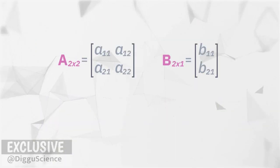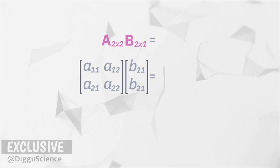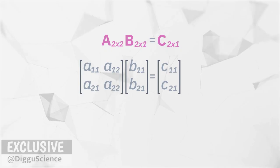As an illustration, the order of matrix A is 2 by 2, and the order of matrix B is 2 by 1. Multiplying matrix A by matrix B will produce matrix C. Matrix C has an order of 2 by 1.